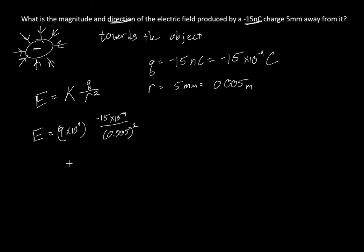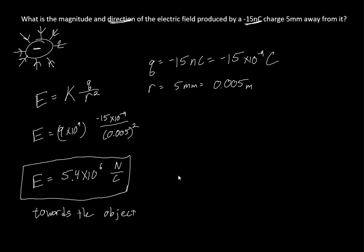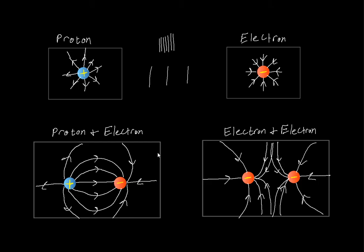So the electrical field strength on here when you plug it all into your calculator, be very, very careful with the scientific notation, will actually end up with 5.4 times 10 to the 6th. And if we remember our units are newtons per coulomb. So that is the field strength of this negative 15 nanocoulomb charge at a distance of 5 millimeters and again the direction of the field is going to be towards the object. So that's a quick idea of how you can actually plug into the equations and what those field lines should look like.